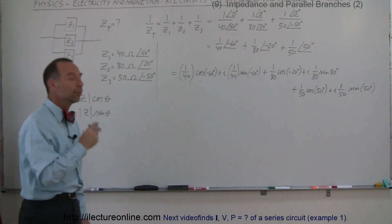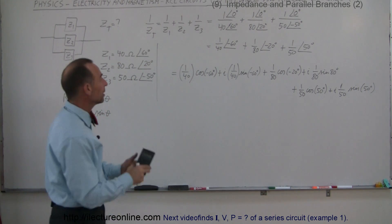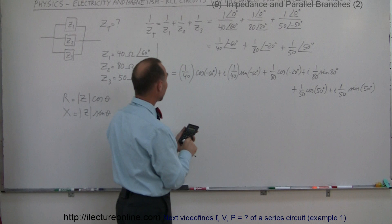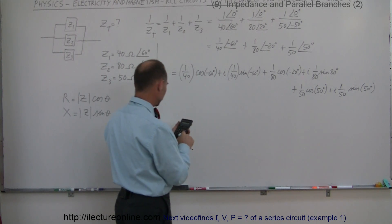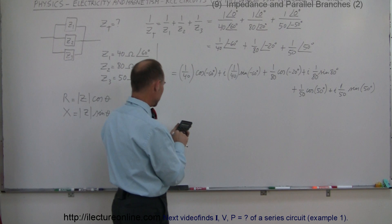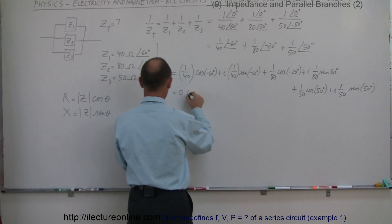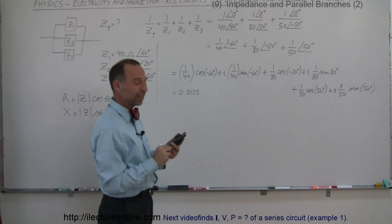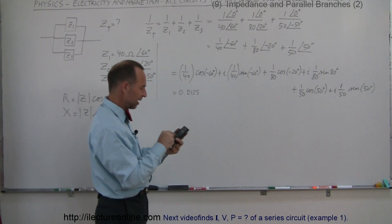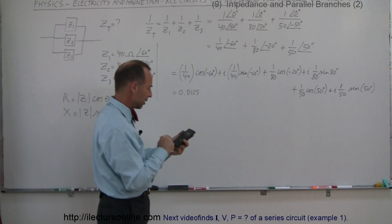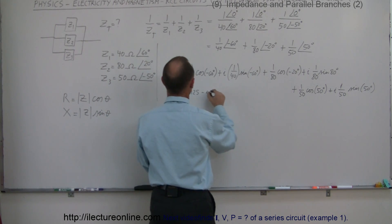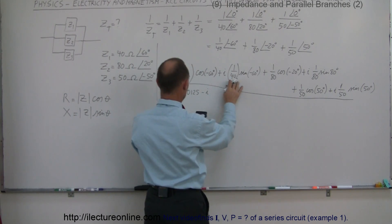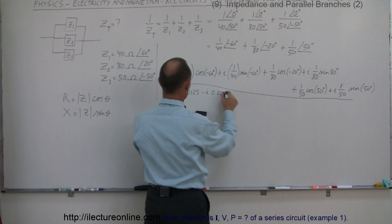Now we calculate the real and imaginary parts for each inverse impedance. For Z1: cosine of minus 60 degrees is 0.5, divided by 40 gives 0.0125. The sine of minus 60 degrees is negative, divided by 40 gives minus j times 0.0217. For Z2: cosine of minus 20 degrees divided by 80 gives plus 0.0117, and sine of minus 20 degrees divided by 80 gives minus j times 0.0043.